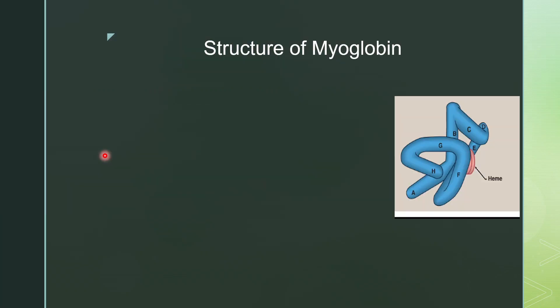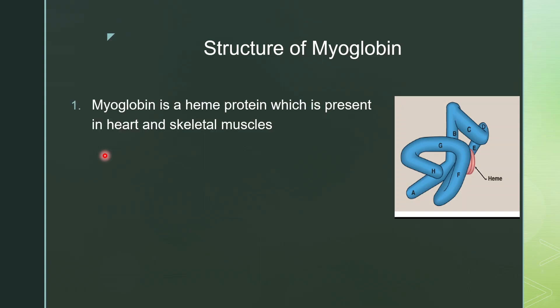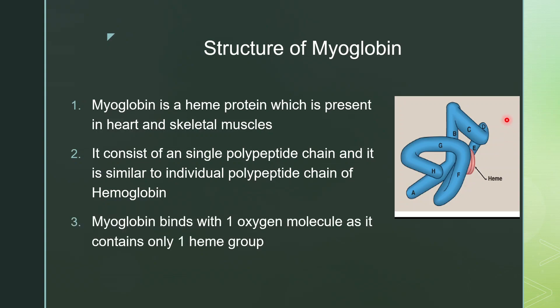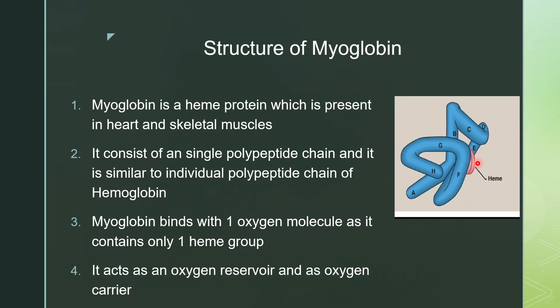Now let us look at the structure of myoglobin. Myoglobin is also a heme protein — a polypeptide containing heme — present mainly in heart and skeletal muscles. It consists of a single polypeptide similar to one individual polypeptide chain of hemoglobin. This polypeptide is capable of binding oxygen because it contains heme. Since myoglobin has only one heme group bound to one polypeptide, it binds only one oxygen molecule.